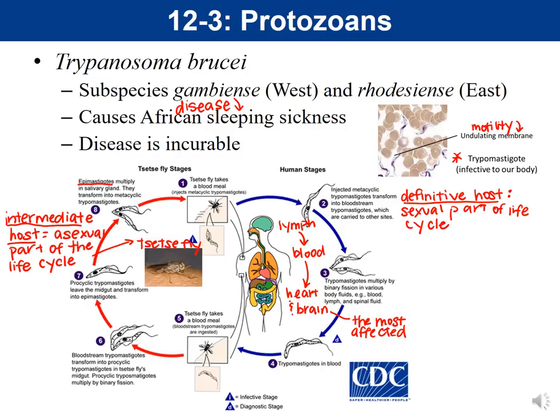At the site of the bite, a canker — a sore — forms. Once the organism is injected into the wound, it travels through the lymph system into the bloodstream. One reason this organism is so interesting is that many organisms can't survive in the bloodstream because they're constantly bombarded by white blood cells, which are responsible for fighting off invaders. Normally, if an organism is in the bloodstream, it's being attacked by these white blood cells.